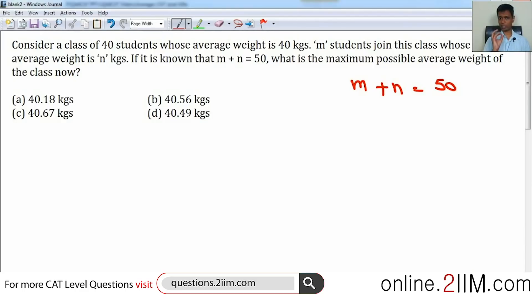Very simple idea but a very powerful idea. If the existing average is 40 and new students coming in have an average more than 40, overall average will increase. If their average is less than 40, overall average will decrease.